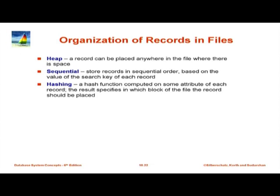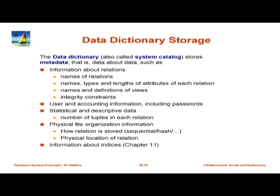The last option is hashing, where you compute a hash function on one or more attributes of the record, and that hash function tells you where the record should go. Oracle still supports hashing, though it is no longer encouraged as much, for reasons to be covered later.